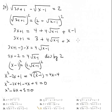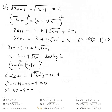Factoring: the combination is 5 and 1, since 5 times 1 is 5 and 5 plus 1 is 6, both negative. The solutions are x equals positive 5 and x equals positive 1.